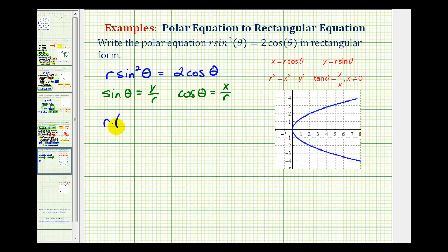So we'd have r times sine squared theta would be y squared over r squared, equals two times cosine theta would be x over r.